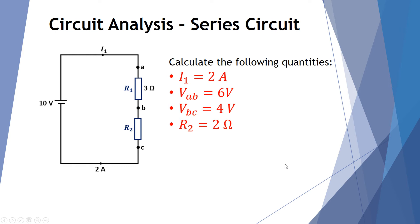By simple analysis of a series circuit, understanding that the current stays the same while the voltage breaks up, and by simple application of Ohm's Law, we discover: current I1 is 2 amps, the voltage between points A and B is 6 volts, the voltage between points B and C is 4 volts — because 6 plus 4 equals 10 — and using Ohm's Law, R2 came out to 2 ohms.